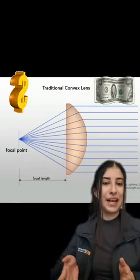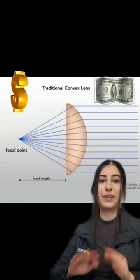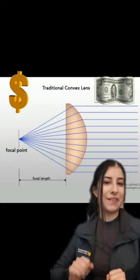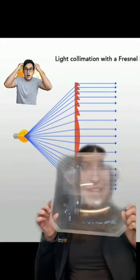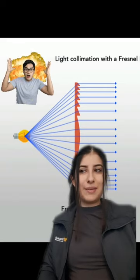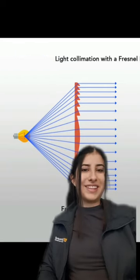But to make a beam as big as those in a lighthouse, you need a really big lens which can get pretty heavy and expensive. But to get around this, lighthouses use Fresnel lenses which are flat but have ridges on them that make them bend light like a normal lens.